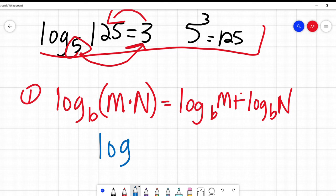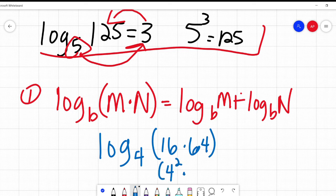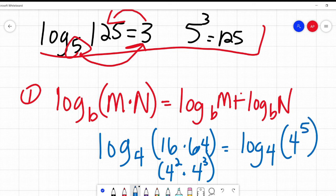It's like log base 4 of 16 times 64. 16 is 4 squared. 64 is 4 cubed. If I want to combine those, it would be 4 squared times 4 cubed. I would add those exponents. So this is the same as log base 4 of 4 to the 5th. 4 to the power of what equals 4 to the 5th? 5.